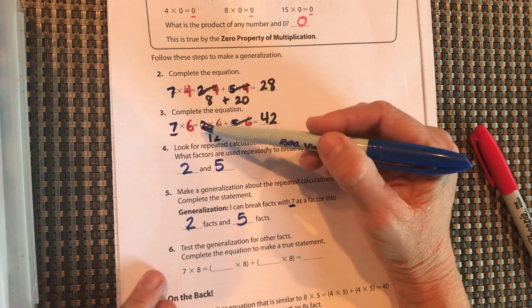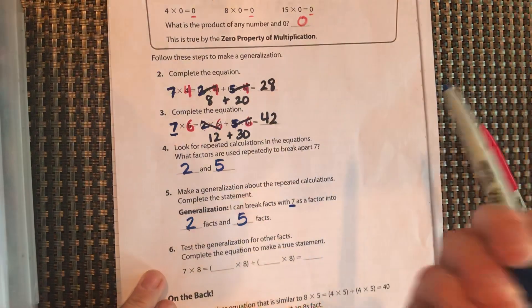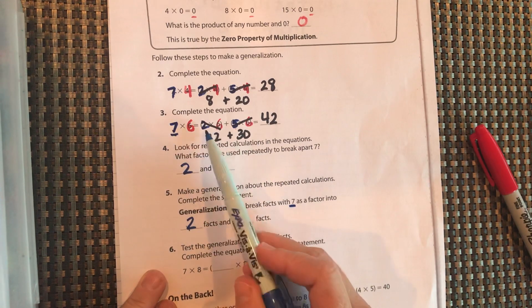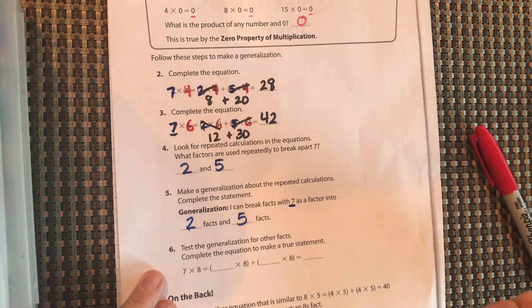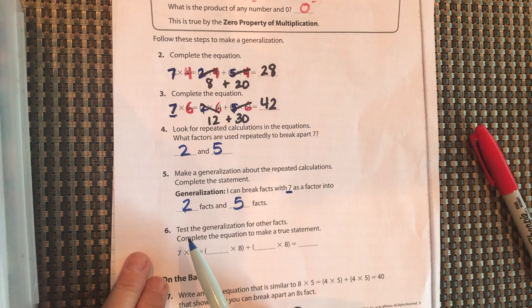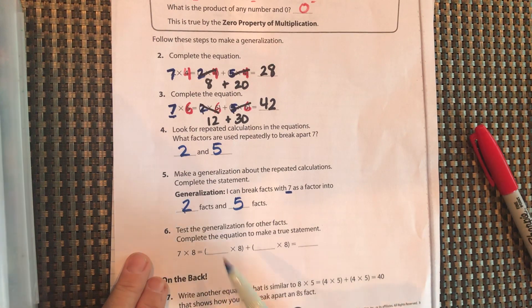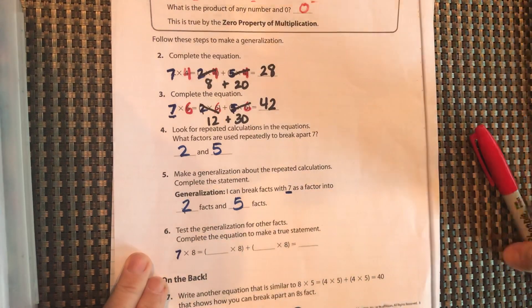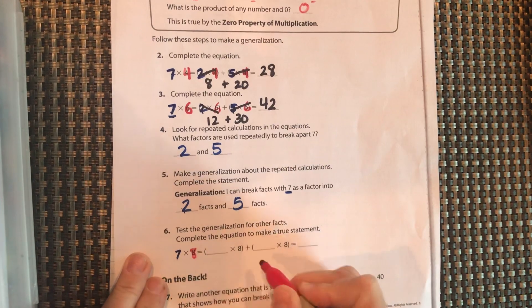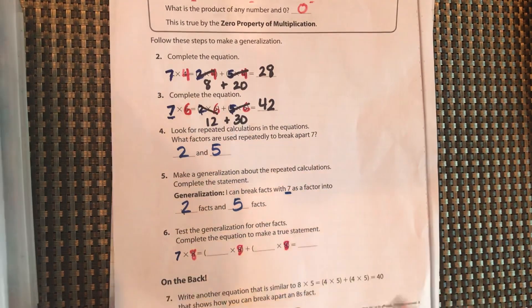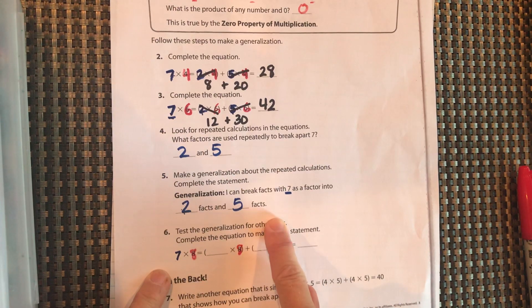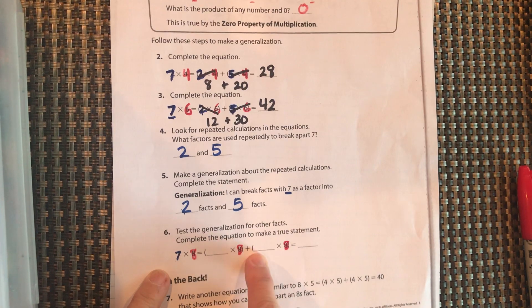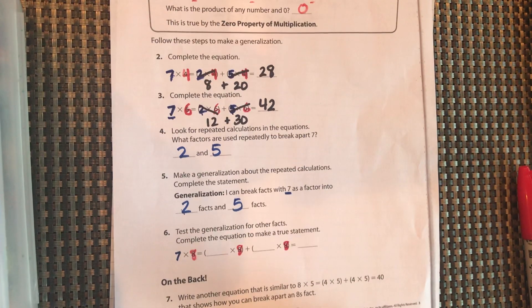We broke that 7 up into 2 and 5, into 2 and 5. So kind of like a conclusion we can draw or a statement we can make is I can break 7 up into 2 and 5 and it will work. Now, we want to test it. We've made a statement. We've said this is true. Let's test it. Let's test our generalization or our statement for other facts. We have 7 times 8. Let's keep the 8 the same. And based on what you said up here, your generalization, show me how you can break this 7 up into 2 numbers, break it down, and then add it up. Pause the video and do that.